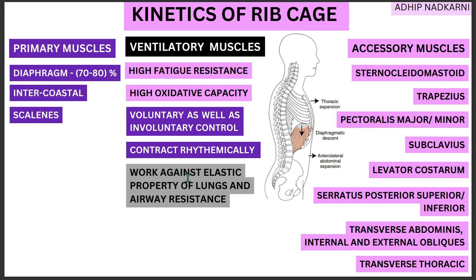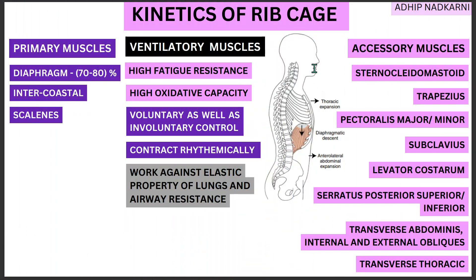Another important point is what these muscles work against. Most muscles in our body work against gravity — for example, lifting my hand up against gravity. But your respiratory muscles work against airway resistance. As the diaphragm moves down, negative pressure is created, air moves from high pressure to low pressure, and there is airway resistance along the way. So the diaphragm works not against gravity, but against airway resistance and other related factors.